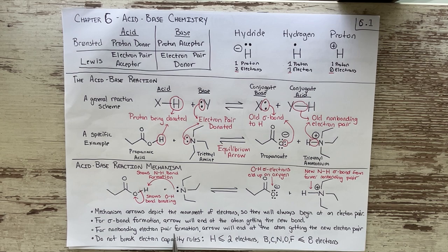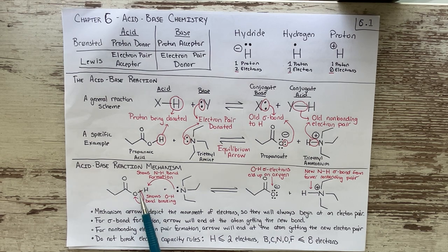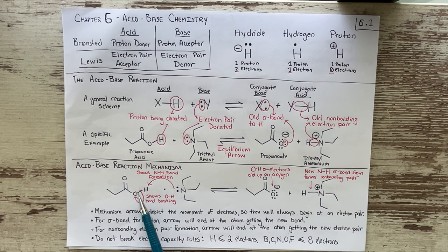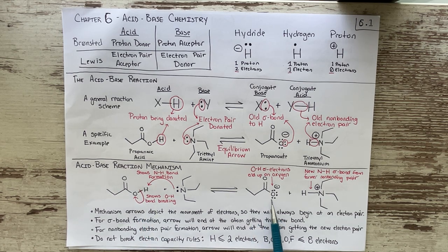For non-bonding electron pair formation, the arrow will end at the atom getting the new electron pair. This arrow shows the O-H bond breaking and those two electrons ending up on oxygen. We show the arrow going through the bond because we're using those two electrons in the bond, and then we point the arrow to the oxygen because those two electrons are leaving hydrogen and staying with oxygen to form a new lone pair.